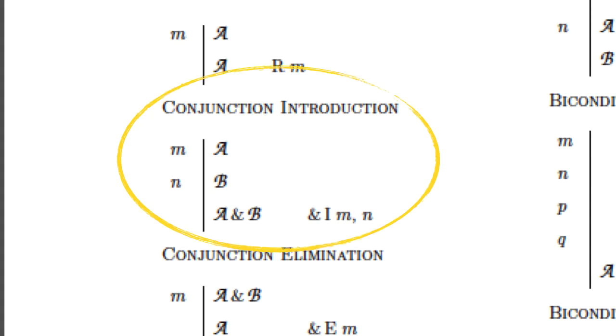Here's the schematic version of the rule. You have two sentences somewhere in the proof. You can write down the conjunction of those two sentences. Here it refers to lines M and N. In an actual proof those will be numbers but they don't have to be right next to each other. There are any two lines earlier in the proof.